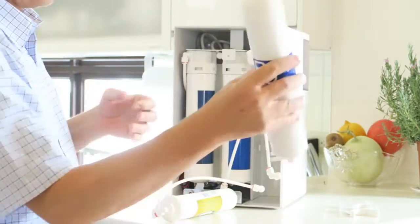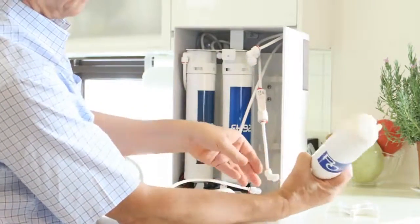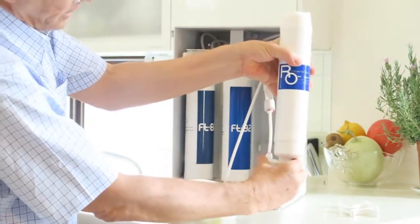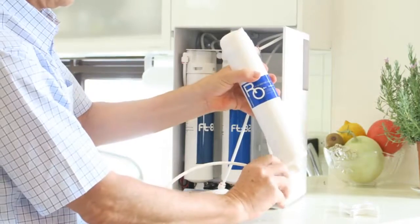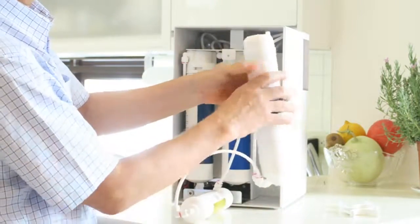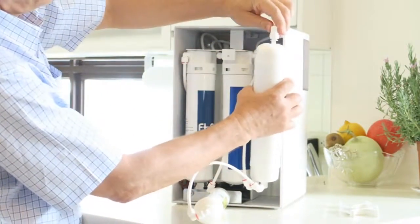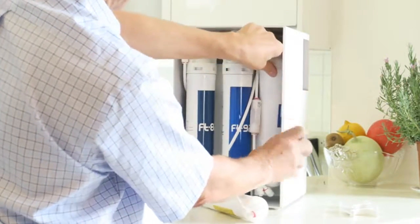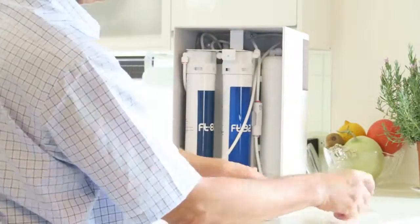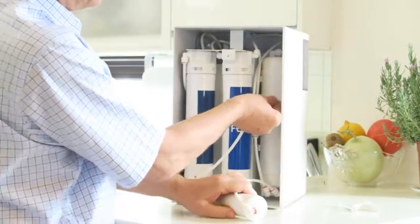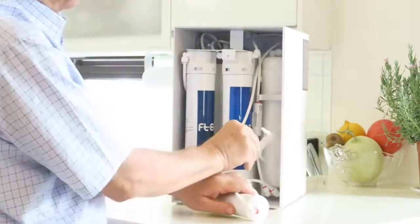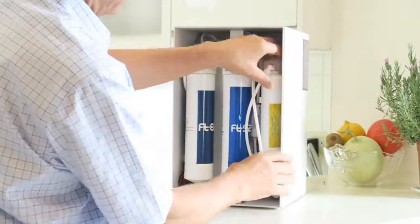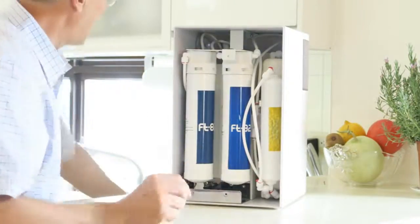Then you take your new RO membrane, reverse the process. Just slide the quick connectors back on. Put the RO membrane back into its brackets. Put the holding clamps on for the post filter. And pop the post filter back on.